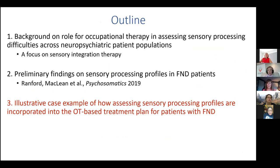Now that we know people with FND are experiencing sensory difficulties and we understand how they're processing information and what behaviors they're engaged in, we can look at helping people figure out what to do about it and how to get better. In our OT assessment, we focus on sensory modulation. We look at what sensory symptoms people are having, whether they have hypersensitivities to lights or sounds, specific triggers, any strategies or activities that make symptoms better, and what coping strategies they use.